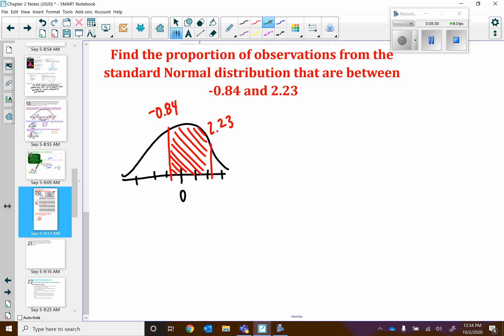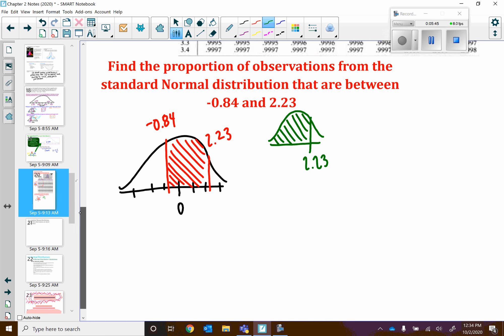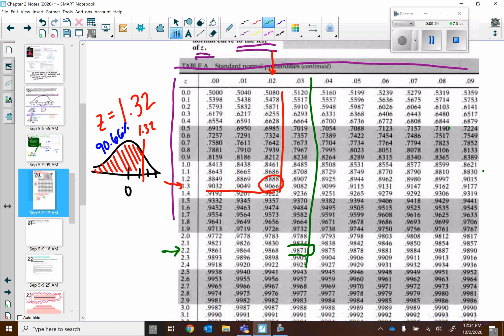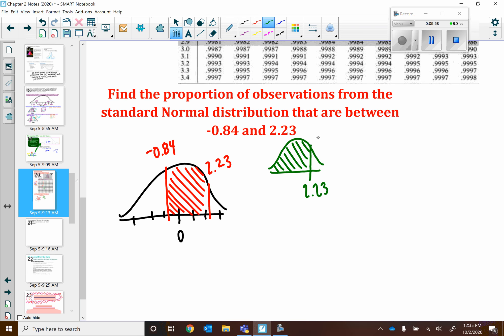How can I do this? I'm going to technically do it in two steps. I'm going to start by looking at all of the area to the left of 2.23. Why? Because that's what our table tells us. So I'm going to go up 2.2 and 2.23. So we are at right here, 0.9871. This area right here is 0.9871.